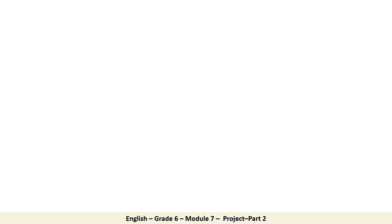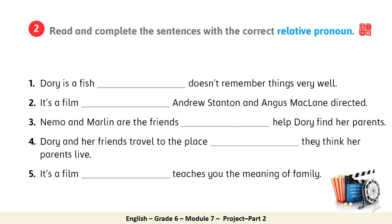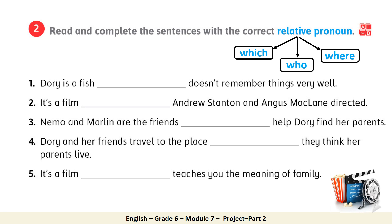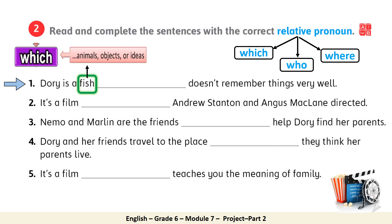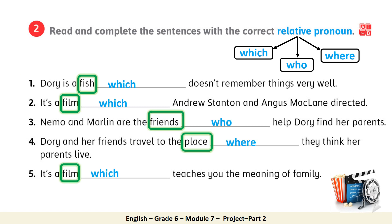Now let's practice using them. Open your workbook page 74, exercise 2. You need to read and complete the sentences with the correct relative pronoun. Let's do number one together. Dory the fish doesn't remember things very well. Look at the word fish — it's an animal. As you all know, we use which to refer to animals. It's your turn now. Read and complete. Back again. Let's check. You guys are amazing!